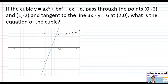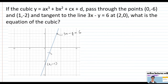Let's identify the points on the graph: (0, negative 6), (1, negative 2), and (2, 0) — which is also a point on the cubic since it is tangent to the line there. These three points and the tangency condition will give us the equations we need.